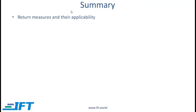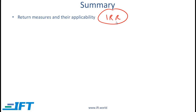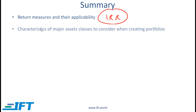We are done with this very long reading. In summary, we talked about return measures and their applicability: holding period return; arithmetic mean, used when you have returns of stocks in the same time period; geometric return, which makes sense for time series data; and money-weighted return, which is essentially the IRR and makes sense when the investment manager decides when to deploy cash. We also covered characteristics of major asset classes — return characteristics, risk characteristics, covariance, skewness, and kurtosis.